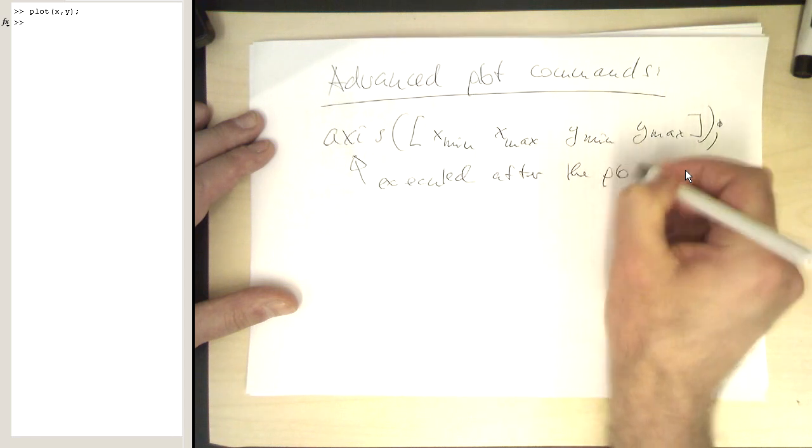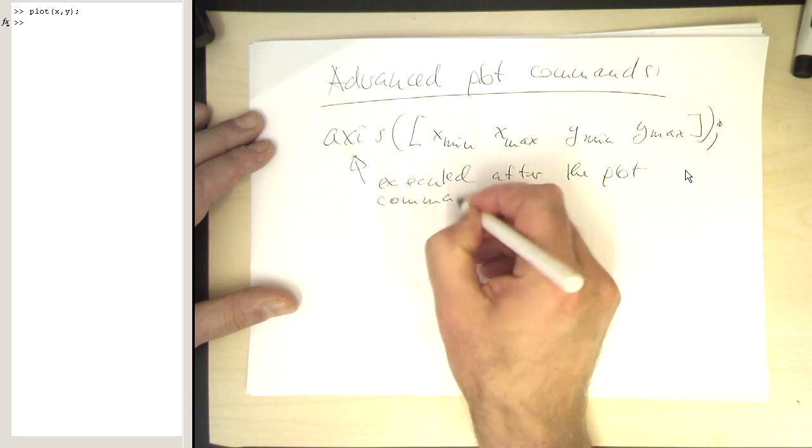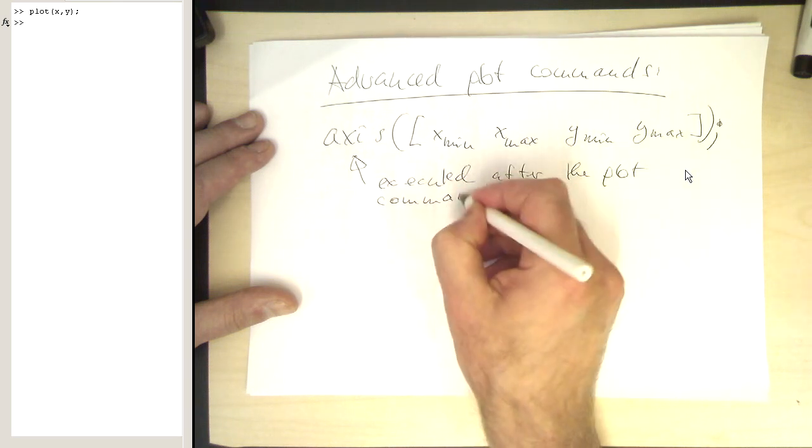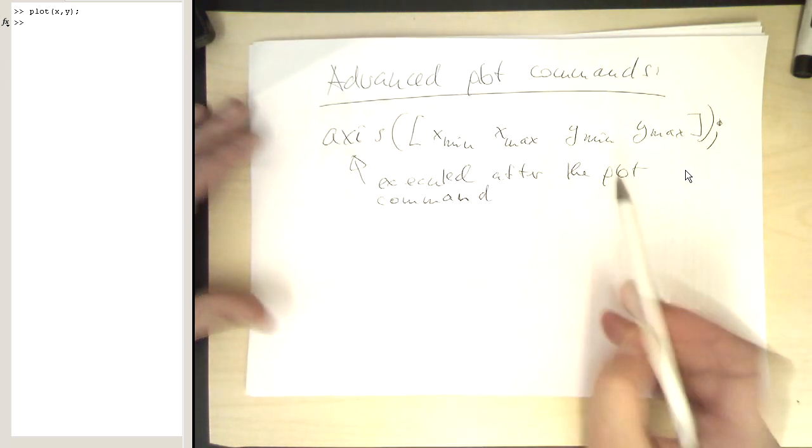and y max as a vector and with that this needs to be executed after the plot command. This is a bit counterintuitive that you first have to issue the plot command and then you modify the plot with all different kinds of commands, for example the axis.